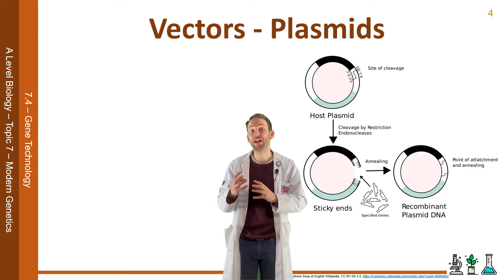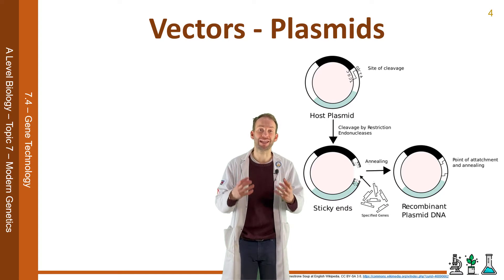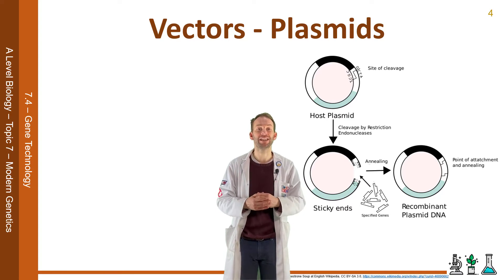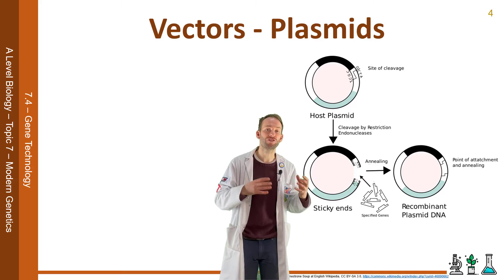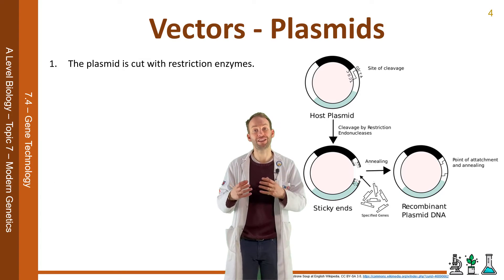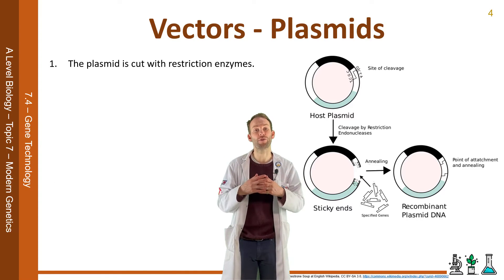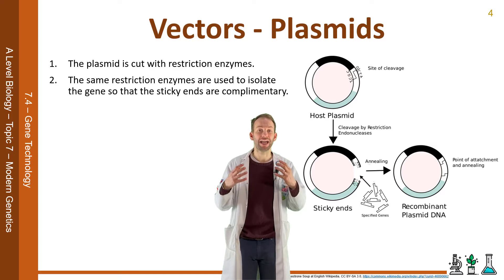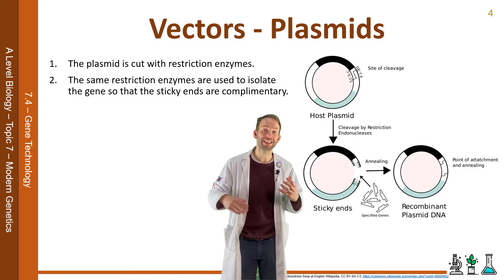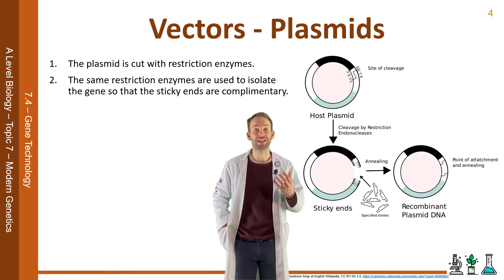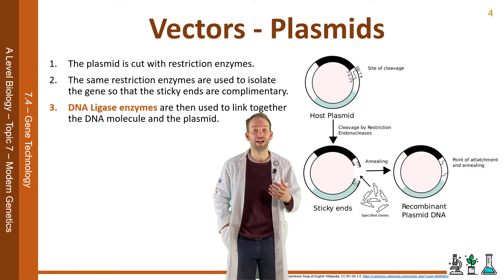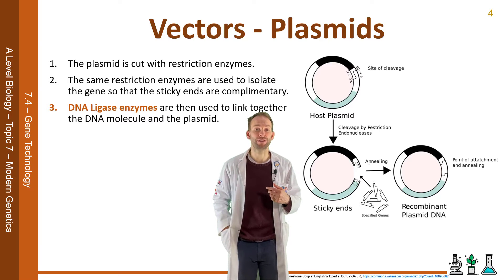The plasmid is cut with restriction endonucleases. The same restriction endonucleases are used to isolate the gene so that those sticky ends are complementary, and then DNA ligase enzymes are used to link those together, and now we've formed recombinant DNA.